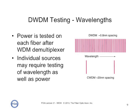Testing the power in a DWDM system or CWDM system isn't all that difficult. After the wavelengths have been demultiplexed into each individual wavelength channel, any standard power meter can measure the power. But the individual sources may require testing for wavelength, as the wavelength is critical for making sure that the system operates properly. If the wavelength changes, the demultiplexing and multiplexing of the wavelength may not work properly.